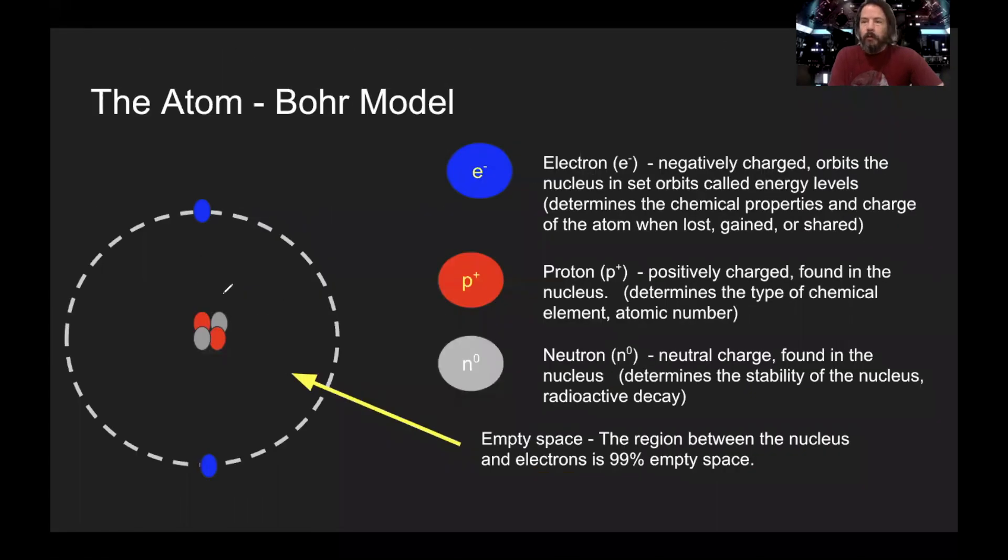So the Bohr model has a nucleus. It's just the center part of the atom. And the red is positive. The gray here are my neutrons, and they're neutral. And then the blue here is my electron, and they're negatively charged. Let's write that as P positive, and N zero.